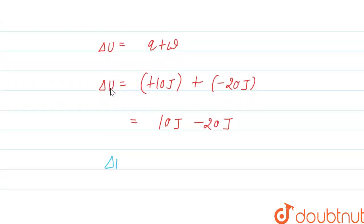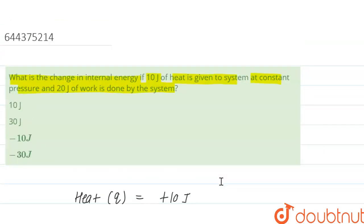The change in internal energy delta U equals minus 10 joules. So our change in internal energy is -10 joules, and the correct option is option number three: minus 10 joules. I hope this answered your question.